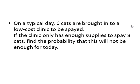Here's another Poisson problem where coming up with the value for x is the hard part. On a typical day, 6 cats are brought into a low-cost clinic to be spayed. Lambda is 6. If the clinic only has enough supplies to spay 8 cats, find the probability that this will not be enough for today. t is 1. What we have to figure out is what is x. They have enough supplies to spay 8 cats. So if 0 cats are brought in, they have enough. If 1 cat is brought in, they have enough. 2 cats, 3 cats, really all the way up through 8 cats, they have enough supplies. But if more than 8 cats are brought in, like 9 or 10 or 11 and so on, they don't have enough supplies. So here, x is going to be greater than 8.